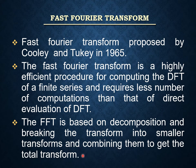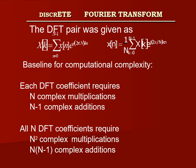FFT is based on decomposition: breaking the transform into smaller transforms and combining them to get the total transform. We decompose a bigger sequence into smaller sequences, apply the transforms, and after all processing combine them to get the total transform. The DFT converts a time domain to frequency domain. Time domain is where information represented by a signal can be obtained at any instance of time.